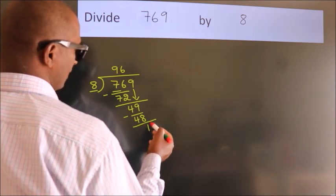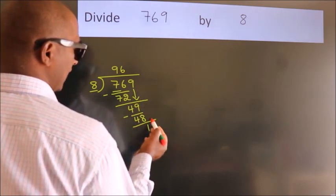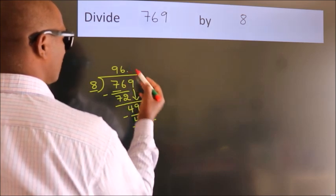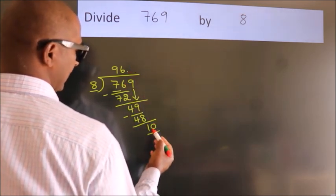After this, no more numbers to bring it down. So what we do is, we put a dot and take 0. So 10.